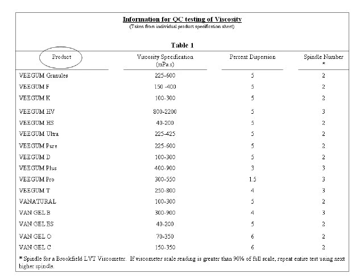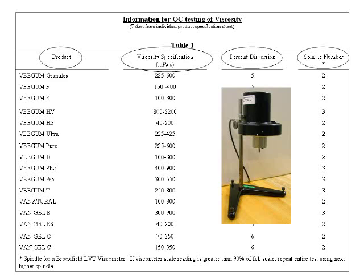Column 1 lists the product. Column 2 lists the viscosity range for each individual product. The third column provides the percent dispersion needed for the proper performance of the test. The last column lists the LV spindle on the Brookfield viscometer. The procedure calls for a viscometer speed of 60 RPM.